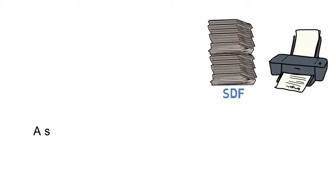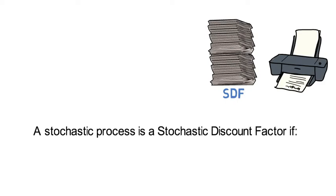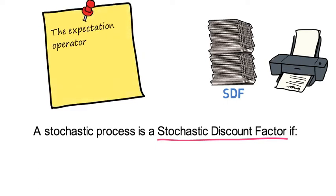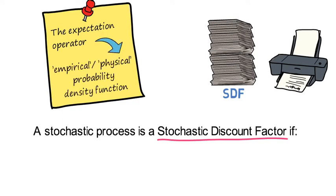We can say that a stochastic process is a stochastic discount factor if it satisfies the following three properties. Before I state these three properties, I want to highlight that the expectation operator that's going to show up is taken with regard to the empirical probability measure, or some say, with regard to the physical probability measure.